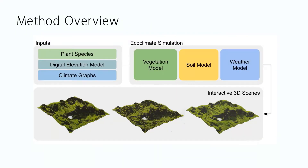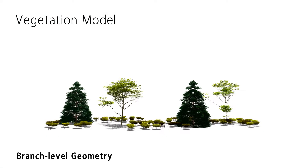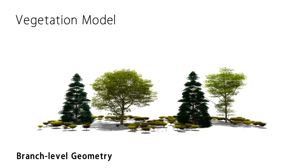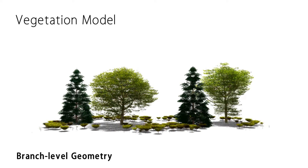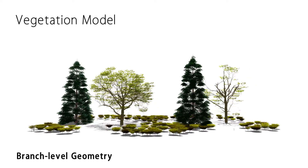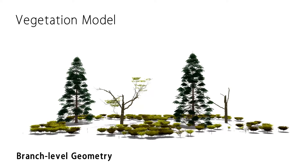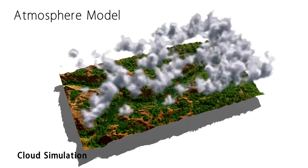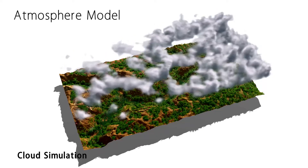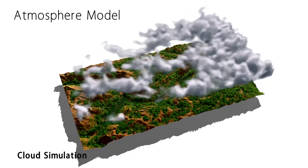Our method simulates changes of the eco-climate to generate realistic 3D outdoor landscapes. It is composed of models for vegetation, soil and weather. Our vegetation model describes the development of individual plants over time. Plants are defined by unique branch geometry and adapt their structure to their local environment by sensing temperature, light and soil water gradients. The weather model allows us to describe a plausible atmosphere and can be used to generate visually realistic cloud formation dynamics.